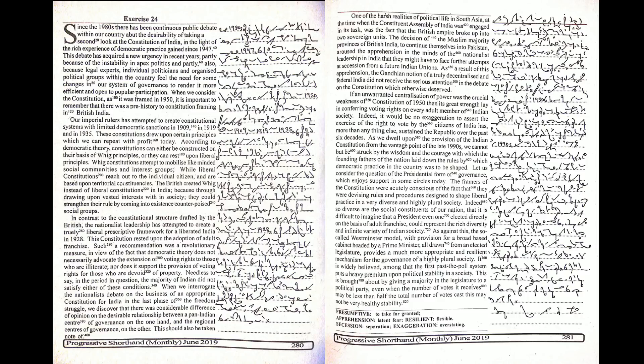Such a recommendation was a revolutionary measure in view of the fact that democratic theory does not necessarily advocate the extension of voting rights to those who are illiterate, nor does it support the provision of voting rights for those who are devoid of property. Needless to say, in the period in question, the majority of Indians did not satisfy either of these conditions.